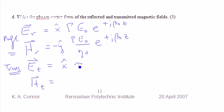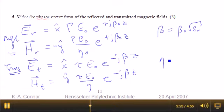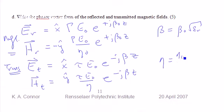For the transmitted wave, all we have to do is multiply by τ. And beta is going to be equal to β₀ times the square root of εᵣ. And then we'll have to come back and do this once we answer part C.